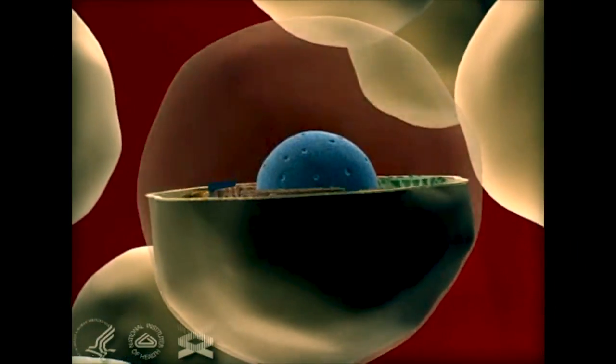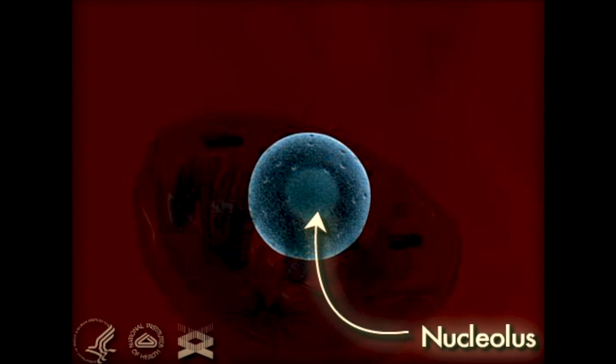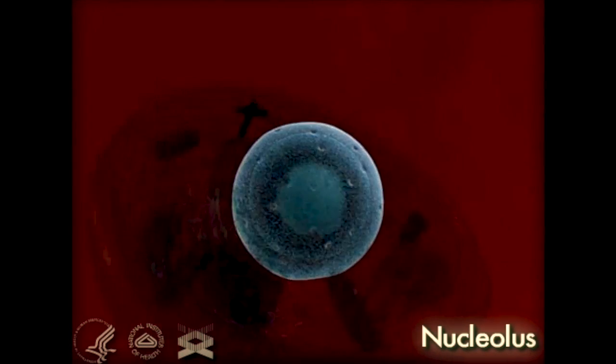Within the cell nucleus, there's a very specific part called the nucleolus. This does not contain the chromosomes.